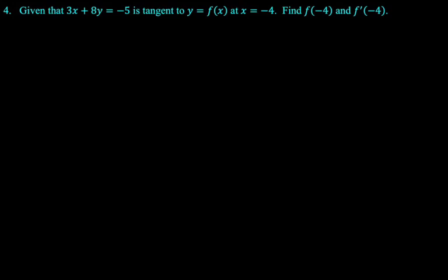All right, next up. Given that 3x + 8y = -5 is tangent to y = f(x) at x = -4, find f(-4) and f'(-4). All right, so this is a tangent line. It's not written the way I would like it, so I'm going to solve for y. So I'm going to say y = (-3x - 5)/8. All right, that's our tangent line.